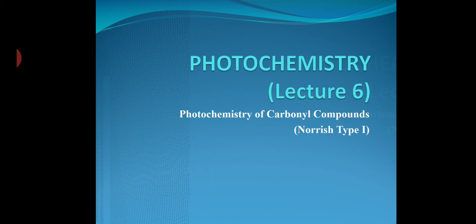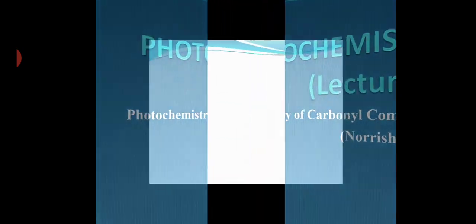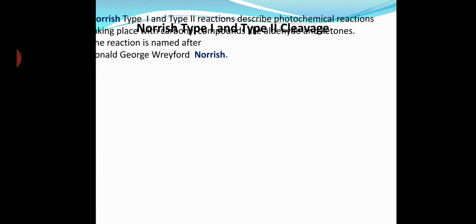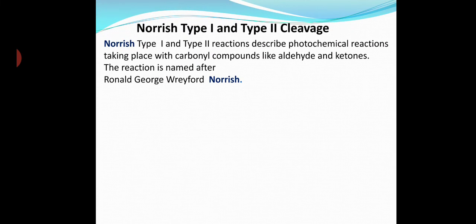What are Norrish Type 1 and Type 2 reactions? They are photochemical reactions with carbonyl compounds like aldehydes and ketones. The reaction was named after Ronald George Wreyford Norrish.